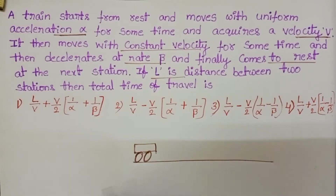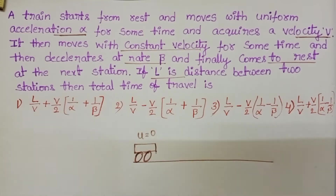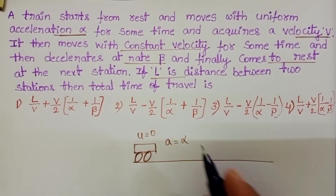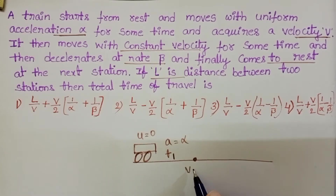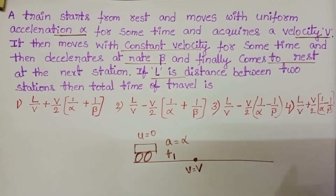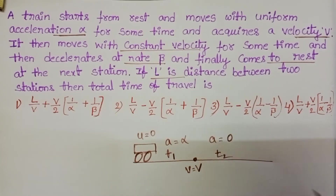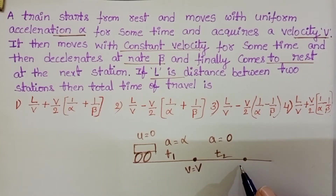In this question, the train starts from rest, so the initial velocity is 0. It then moves with uniform acceleration alpha up to a certain time, let it be T1, and finally acquires velocity v. After that, it continues with constant velocity up to a certain time, let it be T2. Here acceleration is 0, and initial velocity v equals final velocity v.